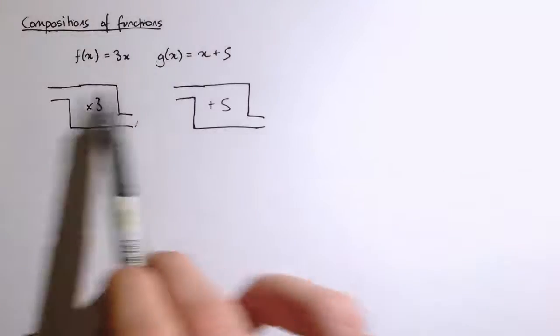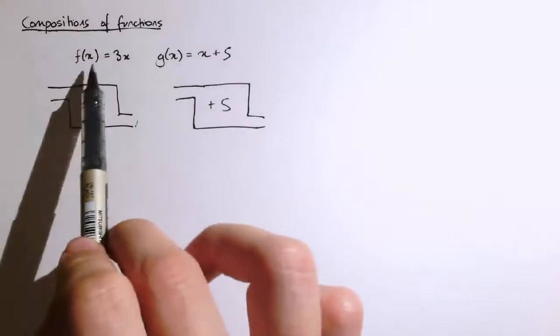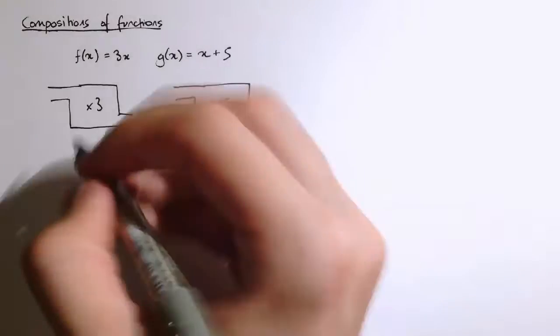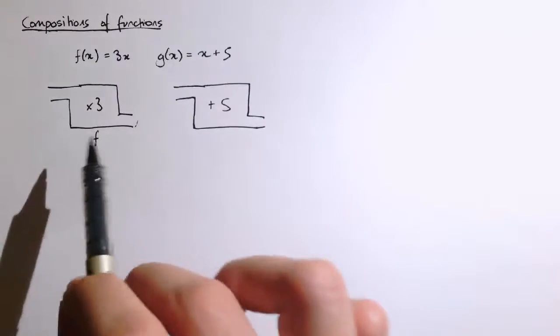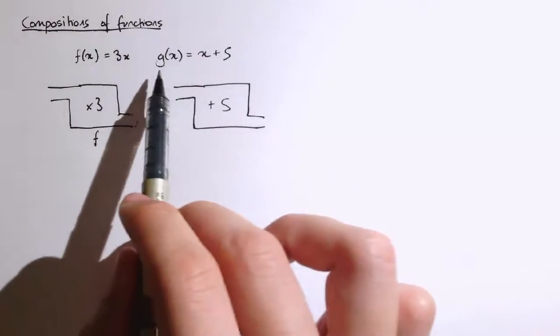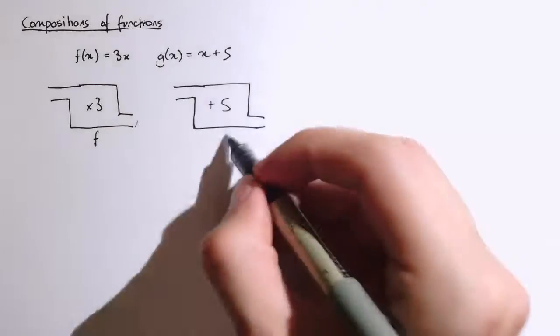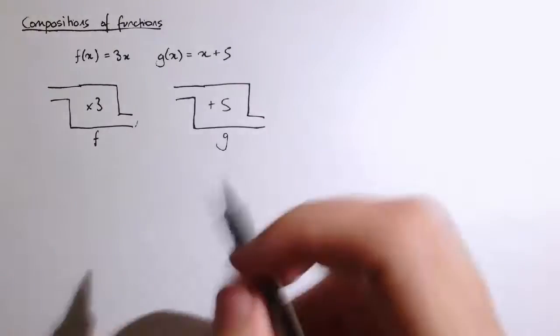So we've got two functions here, f and g. The rule for f is that f of x equals 3 times x, so it's like a trebling machine. If I put something into f, it'll come out as 3 times what it was as the input. And g is a function whose rule is g of x equals x plus 5. So if I put something into g, then it comes out just added on 5. And by composition of functions, what we mean is that we're going to combine these functions together.